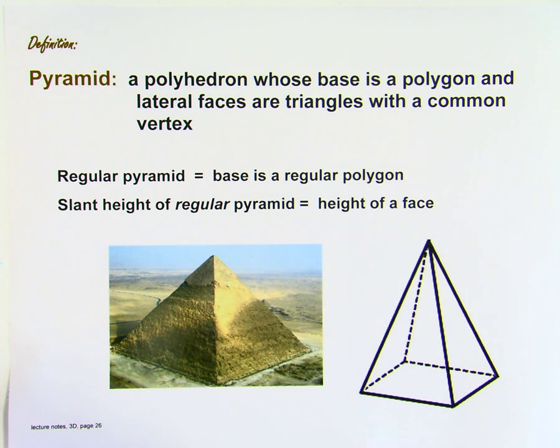This is going to be about finding the surface area of a pyramid. A pyramid is a polyhedron whose base is a polygon and lateral faces are triangles with a common vertex.